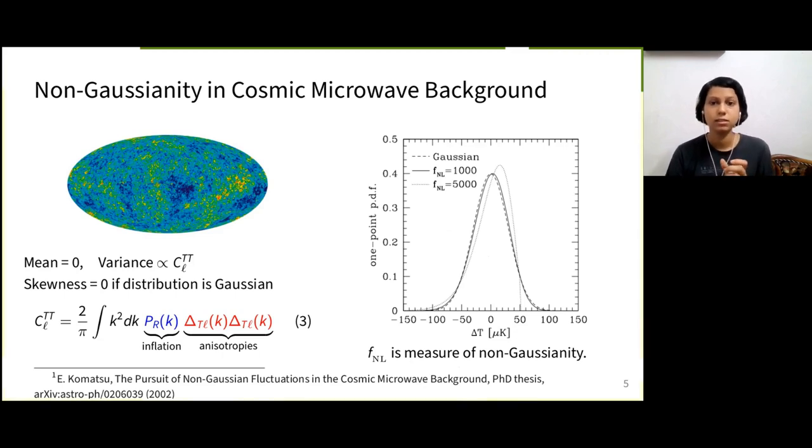Here, the x-axis or del t is the difference between observed temperature and CMB black body temperature. The first moment that is mean is zero. The second moment, that is the standard deviation is non-zero and can be related to angular power spectrum Cl, which in turn can be related to the power spectrum we studied in previous slides using equation 3.